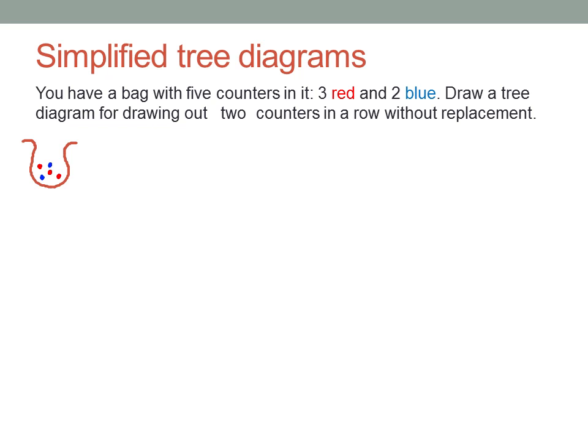That means you're going to pull out one counter and then pull out a second one without putting the original one back in first. Let's draw a tree diagram to model this experiment.